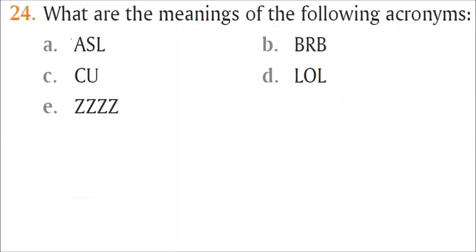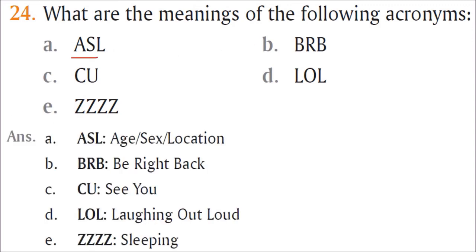What are the meanings of the following acronyms? ASL is for age, sex, and location - normally on Tinder people talk. BRB is be right back. These are small acronyms generally used. CU is see you. LOL is laughing out loud, means very happy. Zzzz means sleeping.